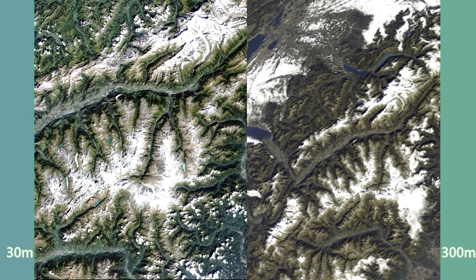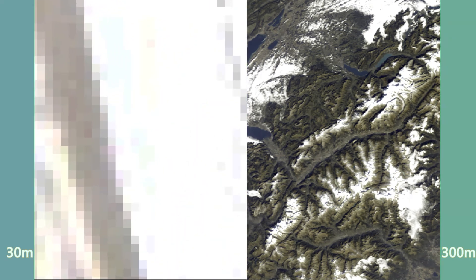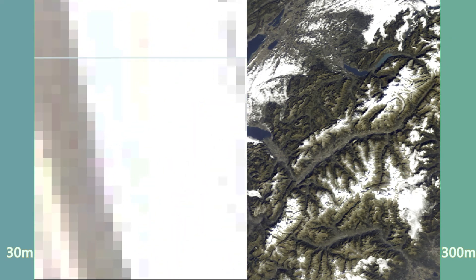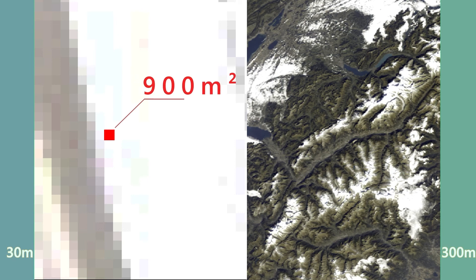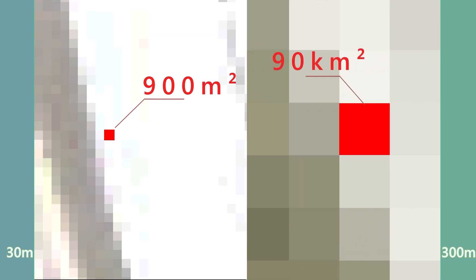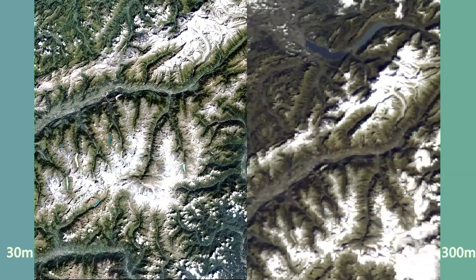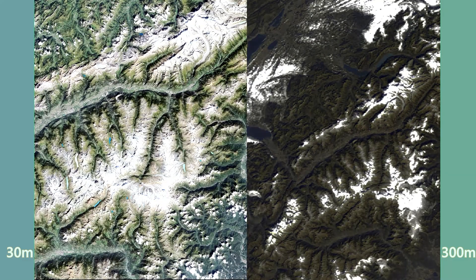In the first case, one pixel corresponds to 900 square meters. In the second, to 90 square kilometers. The left image has the higher resolution. By comparing the two images, a problem of spatial resolution becomes clear too: mixed pixels.